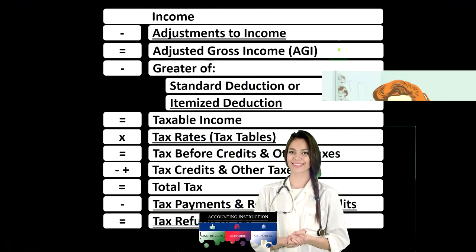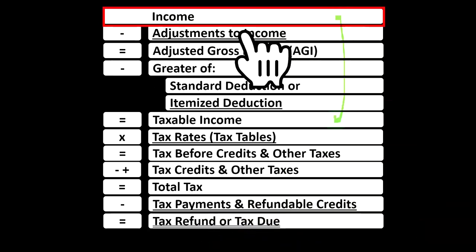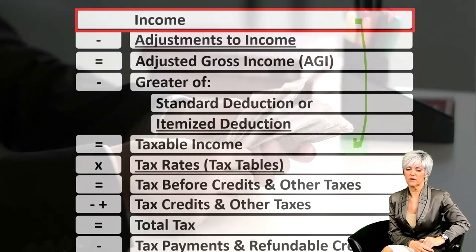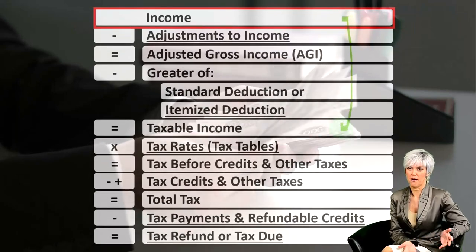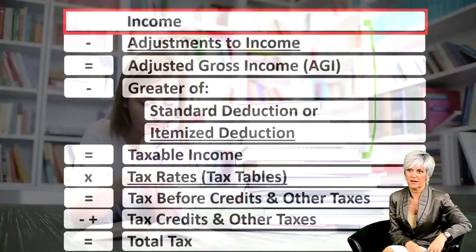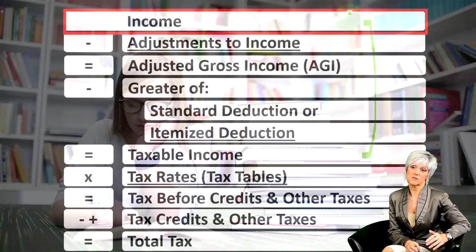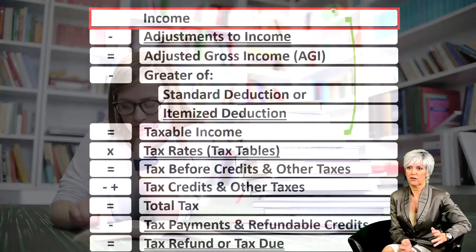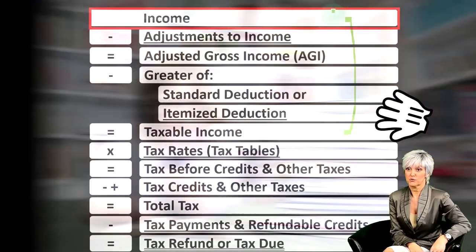Looking at the income tax formula, we're focused on line one — income. Remembering that the first half of the income tax formula is in essence an income statement. Although it's also an outline, a form of scaffolding, with many other forms and schedules flowing into it. One of the things that will flow into the income line would be the Schedule C, which is an entire income statement in and of itself — income minus expenses, the expenses basically being the business deductions.